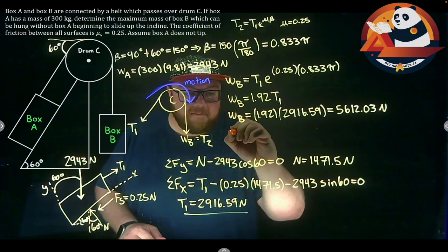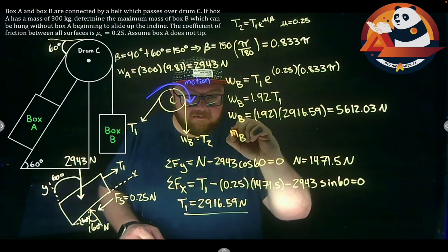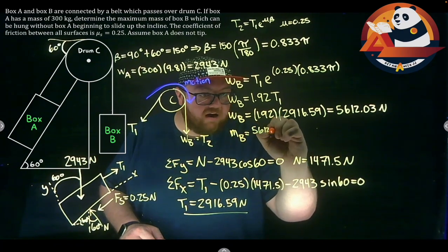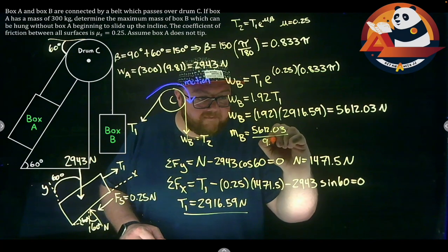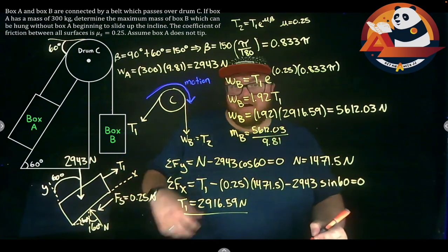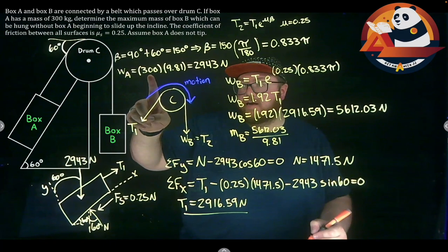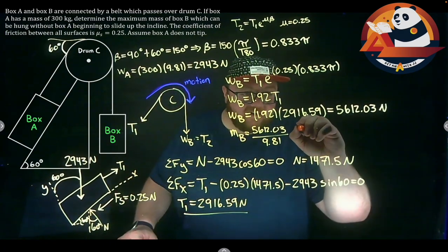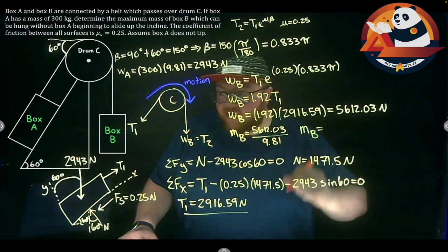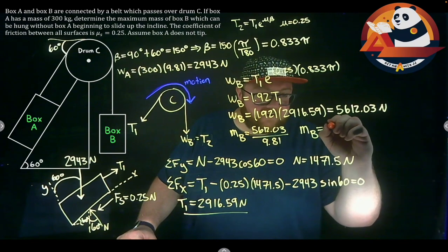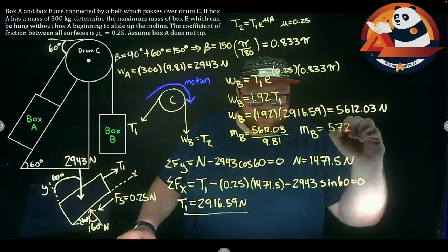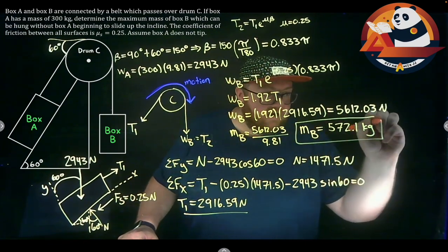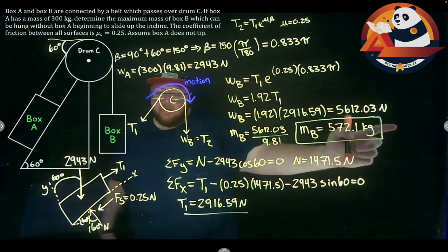But our last thing will be what's that mass? The mass of box B. Mass should be our weight 5612.03 divided by gravity 9.81. If weight is mass times gravity, then mass is weight divided by gravity. That's going to get us to the maximum mass here. Mass of box B is 572.1 kilograms. So let's talk through really quick, well that's our answer to our problem.